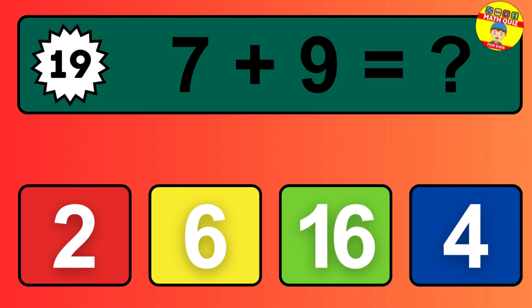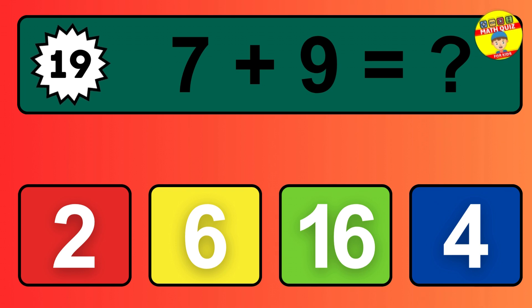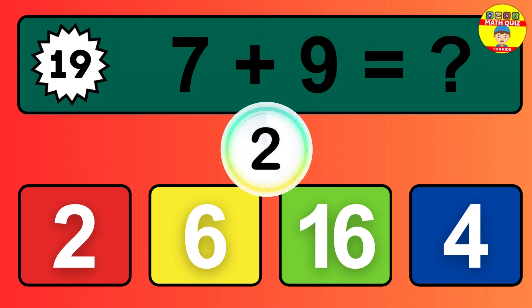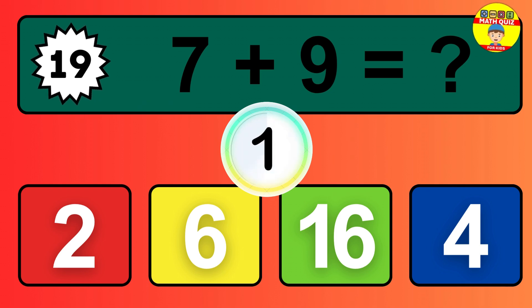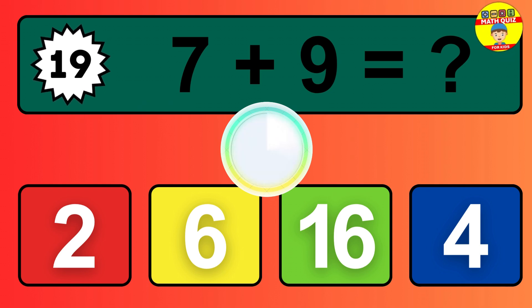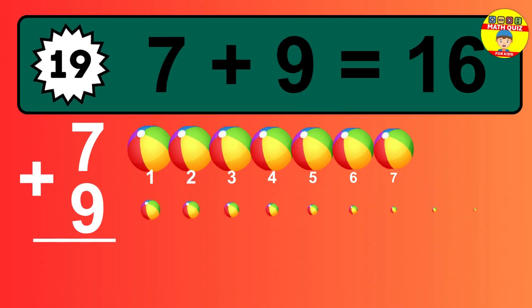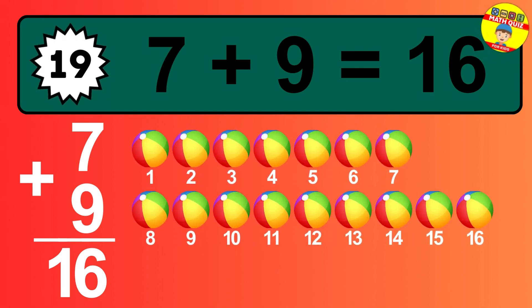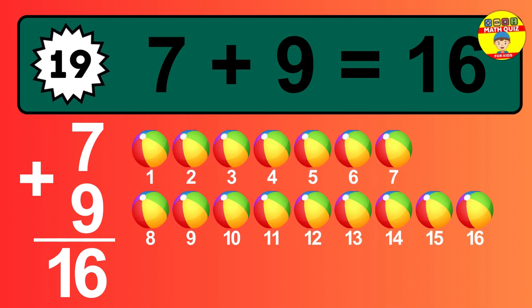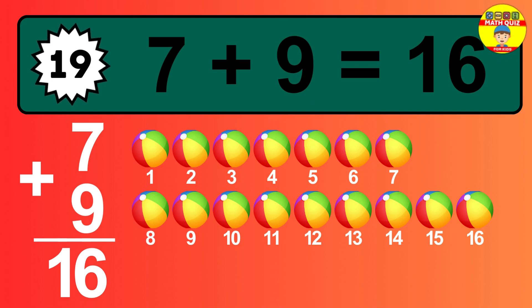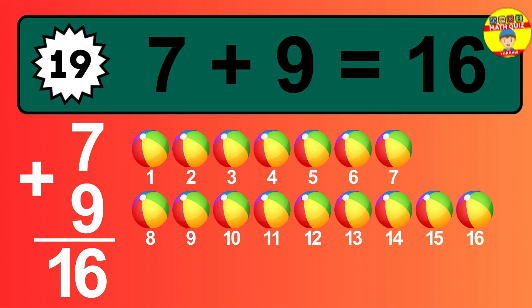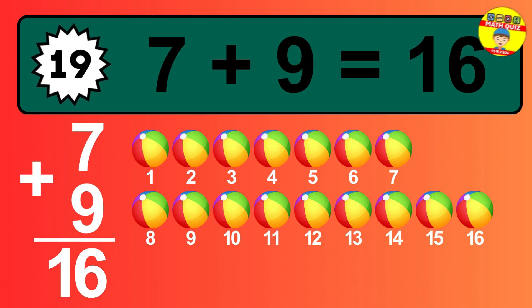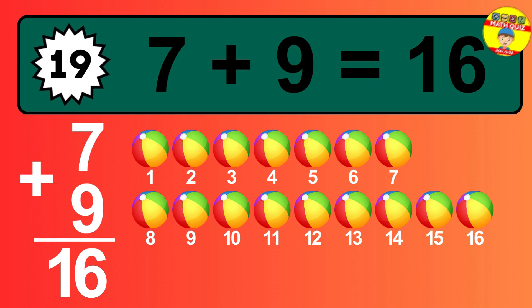Question 19. 7 plus 9 equals what? The answer is 7 plus 9 is 16. Let's count it. 1, 2, 3, 4, 5, 6, 7, 8, 9, 10, 11, 12, 13, 14, 15, 16.